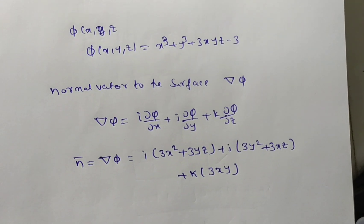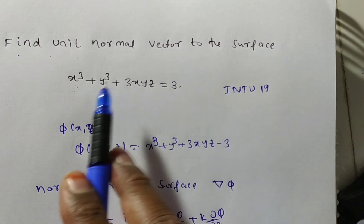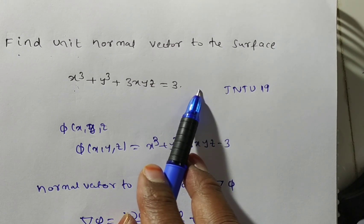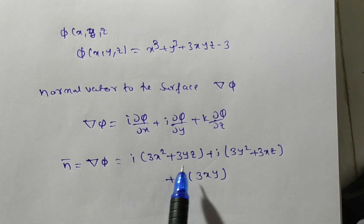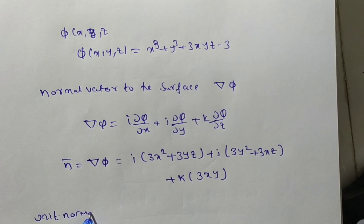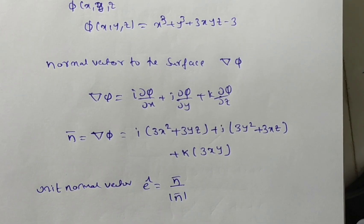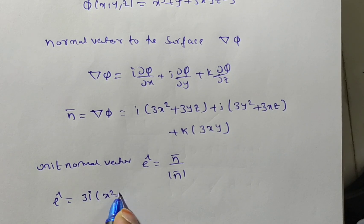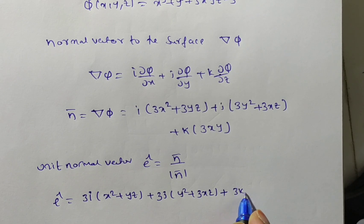Now we need to find the unit normal vector. The unit normal vector n̂ = del φ / |del φ|. We can take 3 as common from each component, giving: del φ = 3i(x² + yz) + 3j(y² + xz) + 3k(xy). Dividing numerator and denominator, the 3 in the numerator and the √9 = 3 from the denominator cancel out.